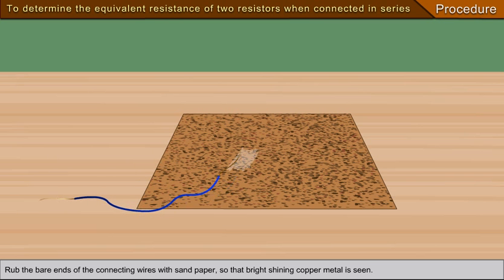Procedure: Rub the bare ends of the connecting wires with sandpaper so that bright shining copper metal is seen.